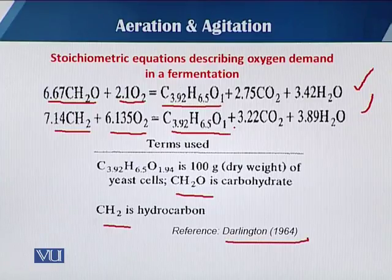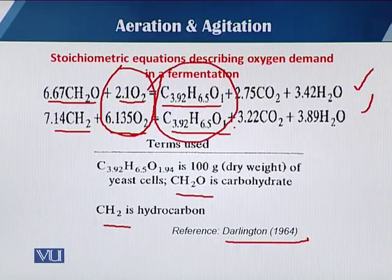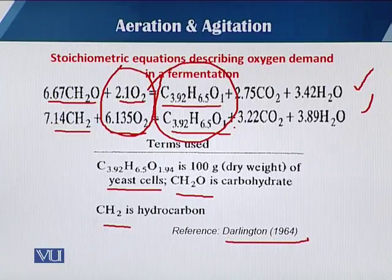These two equations were reported by Darlington in 1964. You can easily see the demand of oxygen, and the organism used is Saccharomyces cerevisiae, which we call yeast cells. By these equations, the requirement of oxygen — how many moles are needed — becomes clear.